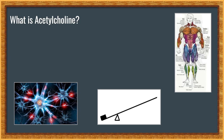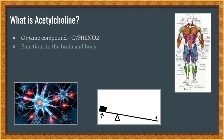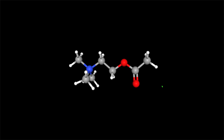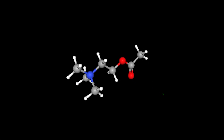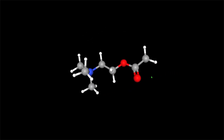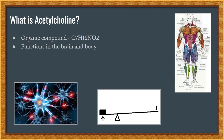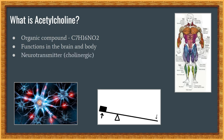To start, acetylcholine, also known as 2-acetoxy-N,N,N-trimethylethanaminium, is an organic compound that functions in the brain, body, and many types of animals, including humans. This is a neat little program that I found where you can look at the chemical structures of these compounds — this is acetylcholine.